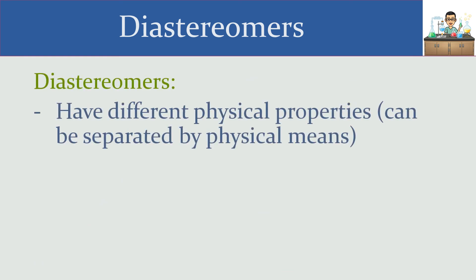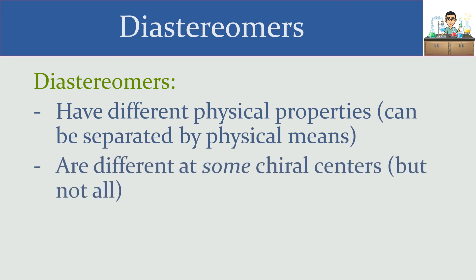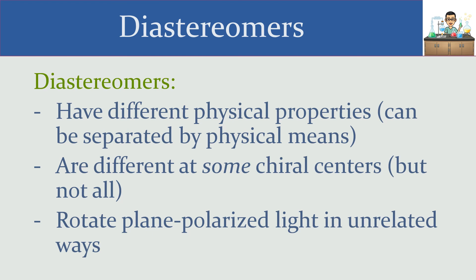To summarize: diastereomers have different physical properties, which means they can be separated using appropriate lab techniques. For example, if you have two diastereomers that differ in boiling point, you can use fractional distillation to separate them; if they have different solubilities, you can use recrystallization. Diastereomers differ at some chiral centers, but not all — because if they differ at all chiral centers, then you have a pair of enantiomers instead. Diastereomers also rotate plane-polarized light in unrelated ways: they could both be negative, both positive, or one plus and one minus, and the values can only be determined in the lab.